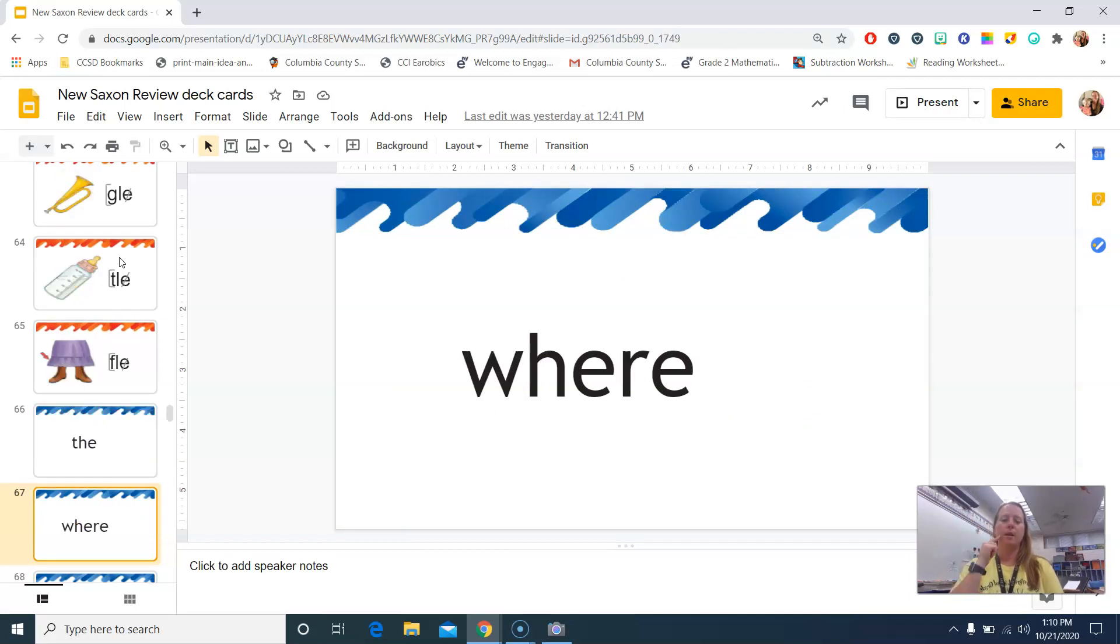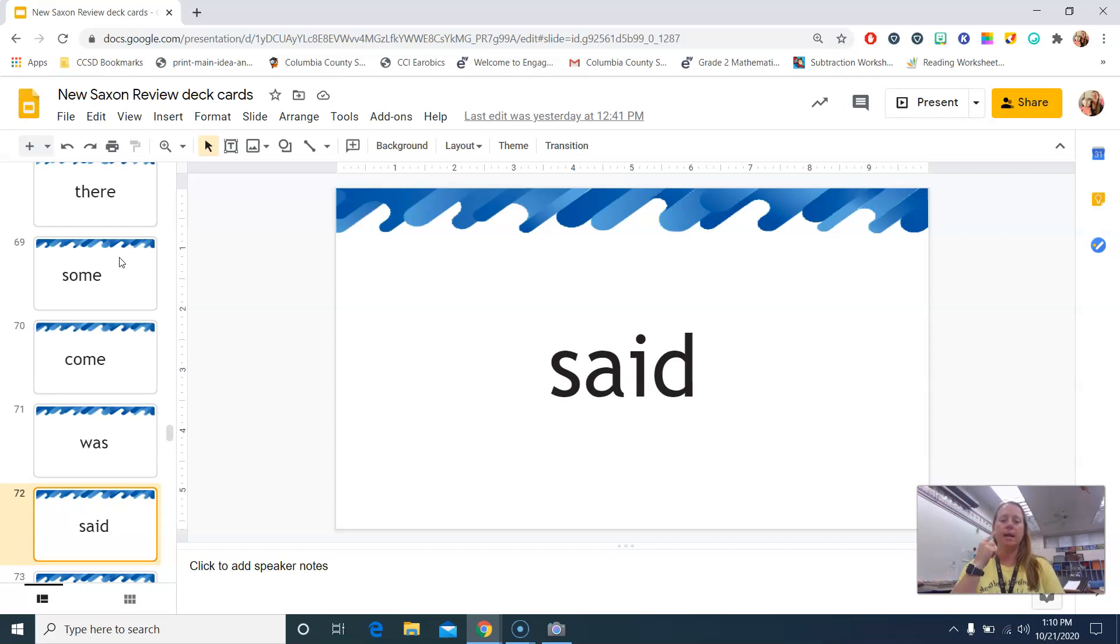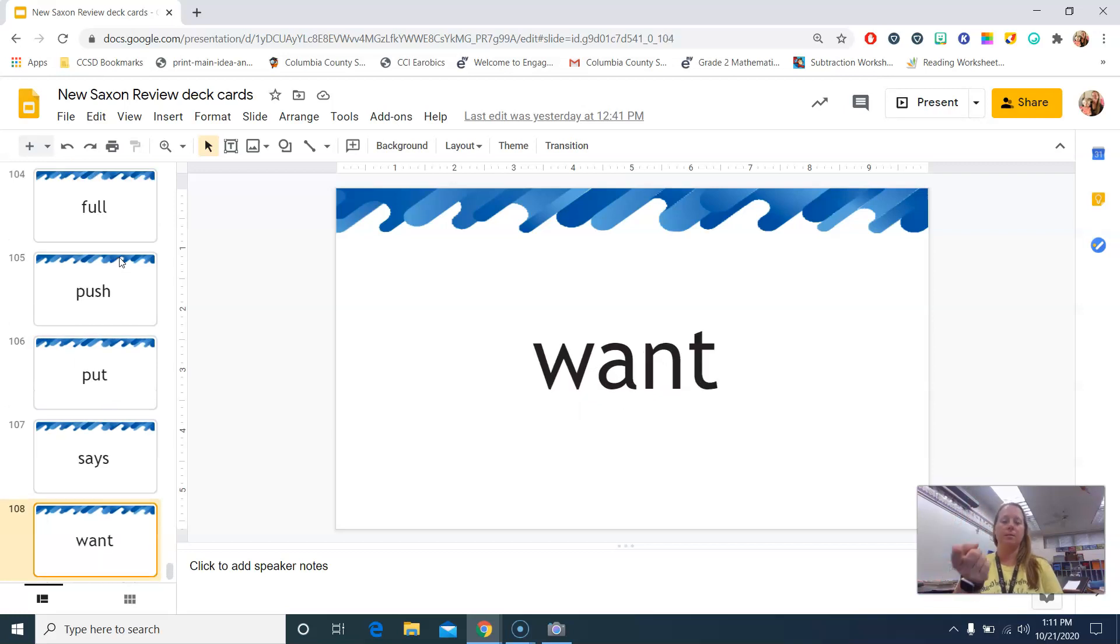Sight words. The. Where. There. Some. Come. Was. Said. To. Of. Have. They. You. From. Together. Today. Something. Are. Don't. Love. For. Tomorrow. Do. To. Who. Into. Should. There. What. Were. Won't. Would. Could. One. Your. Ate. Been. Bush. Does. Fool. Push. Put. Says. Want. And that is our last one.